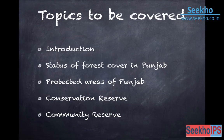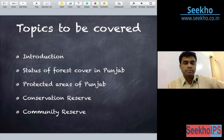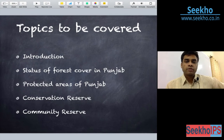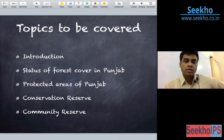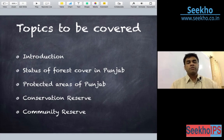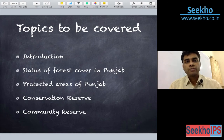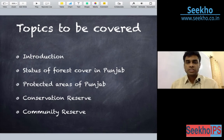In this, we are going to cover the following topics. First, we will introduce the concept. We will try to find out the status of forest cover in Punjab. We will discuss the districts having the maximum and the least cover. Then we will discuss the protected areas in Punjab. Protected areas include conservation reserve, community reserve, wildlife sanctuaries, and BHS.